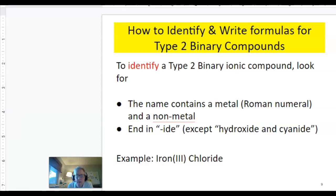This is not so bad because if the name you're given contains a Roman numeral, then you have a type 2 compound. So look for the Roman numeral. And then often it will also end in IDE because those nonmetals will end in IDE. Again, it may have a polyatomic ion. So let's just practice writing a formula for this one shown here on the bottom: Iron 3 chloride.